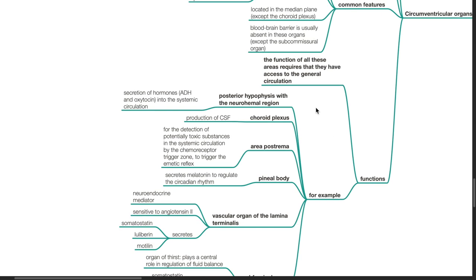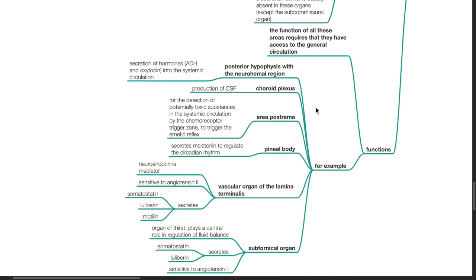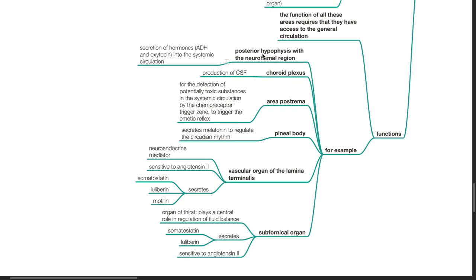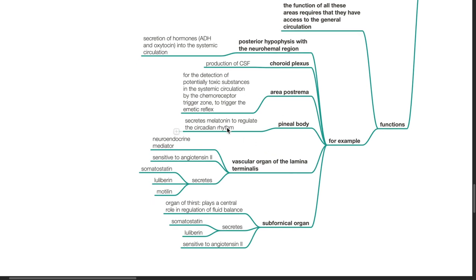Functions. The function of all these areas requires that they have access to the general circulation. For example, the posterior pituitary: secretion of hormones into the systemic circulation such as ADH and oxytocin. For the choroid plexus: production of CSF. For the area postrema: for the detection of potentially toxic substances in the systemic circulation by the chemoreceptor trigger zone to trigger the emetic reflex.